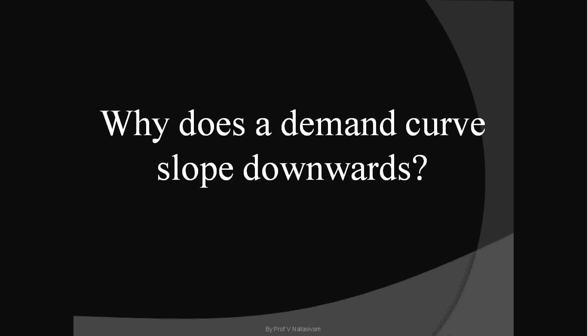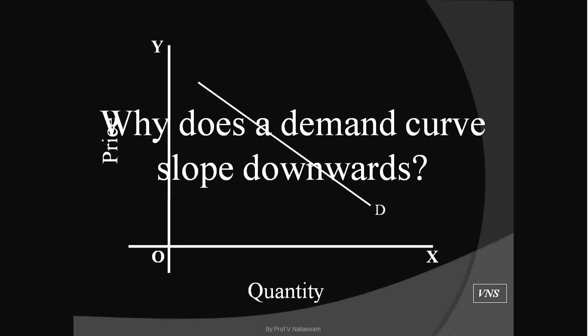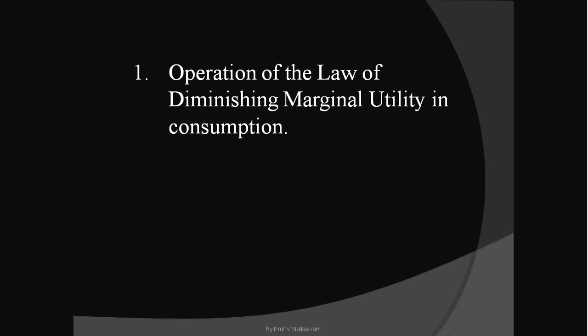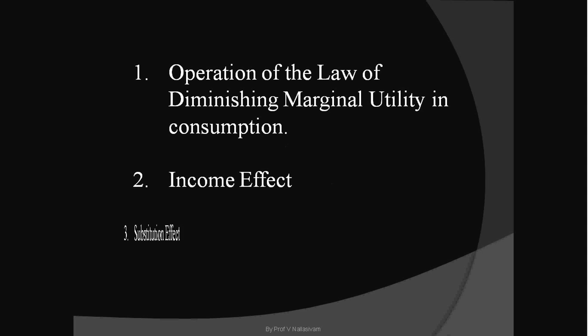Why does a demand curve slope downwards? The prime reasons are: operation of the law of diminishing marginal utility in consumption, income effect, and substitution effect. Let us examine them one by one.